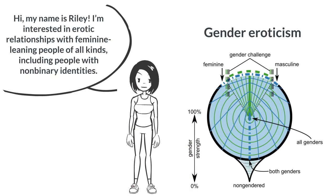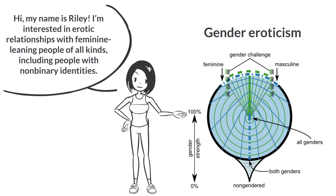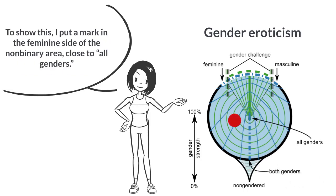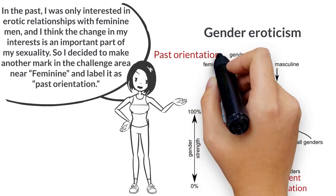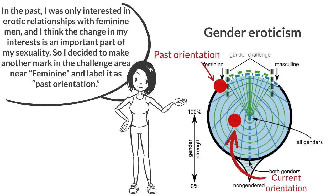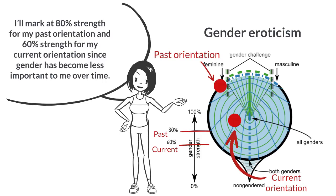Hi, my name is Riley. I'm interested in erotic relationships with feminine-leaning people of all kinds, including people with non-binary identities. To show this, I put a mark in the feminine side of the non-binary area, close to all genders. In the past, I was only interested in erotic relationships with feminine men, and I think the change in my interests is an important part of my sexuality, so I decided to make another mark in the challenge area, near feminine, and label it as 'past orientation.' I'll mark it 80% strength for my past orientation and 60% strength for my current orientation, since gender has become less important to me over time.